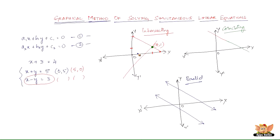To quickly recap how to graph it: when you have two equations, find two solutions for each to get two points, then draw a line through them. Do the same for the second equation to get another line. When you plot both, you'll get one of three results — intersecting, coinciding, or parallel — and based on that, you can determine the nature of the solutions for those simultaneous linear equations. I'll see you in the forthcoming videos with problems based on the graphical method.